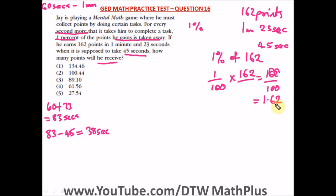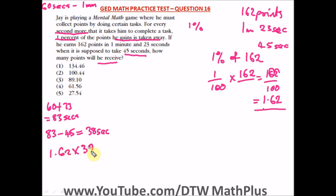Now let's find the total points that will be taken away. Since 1.62 points are deducted per extra second and he spent 38 extra seconds, we multiply: 1.62 times 38. Punch that into your calculator and we get 61.56 points. So 61.56 is the total number of points that will be taken away from his score.